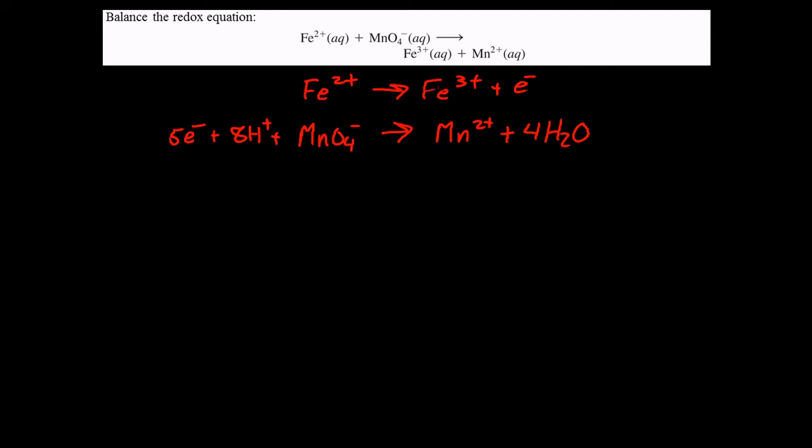we need to get the number of electrons being transferred to be the same. However many are being given up in the oxidation, we need the same number being accepted in the reduction. That's fairly easy to do. We just need five of that first reaction.